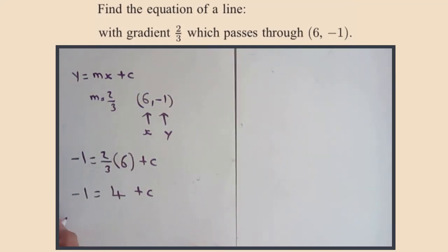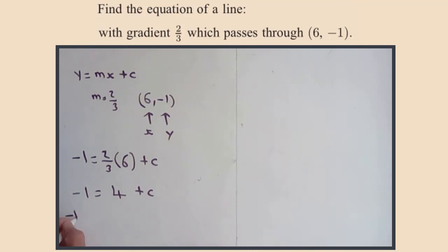Minus one equals four plus c. So as we've solved for c, we need to subtract four from both sides. Minus one minus four equals c. Minus five equals c. So now we have m, we had it all the time, we have c.